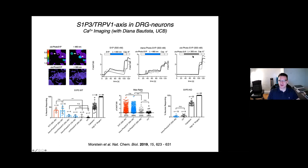Keeping the lipid in the cis form, we don't see this effect. The levels seen upon activation are similar to the endogenous lipid, while in the cis form there is no detectable calcium increase. Taking neurons dissected from S1PR3 knockout animals, we don't see this effect, again indicating that this is specific for sphingosine-1-phosphate receptor 3.